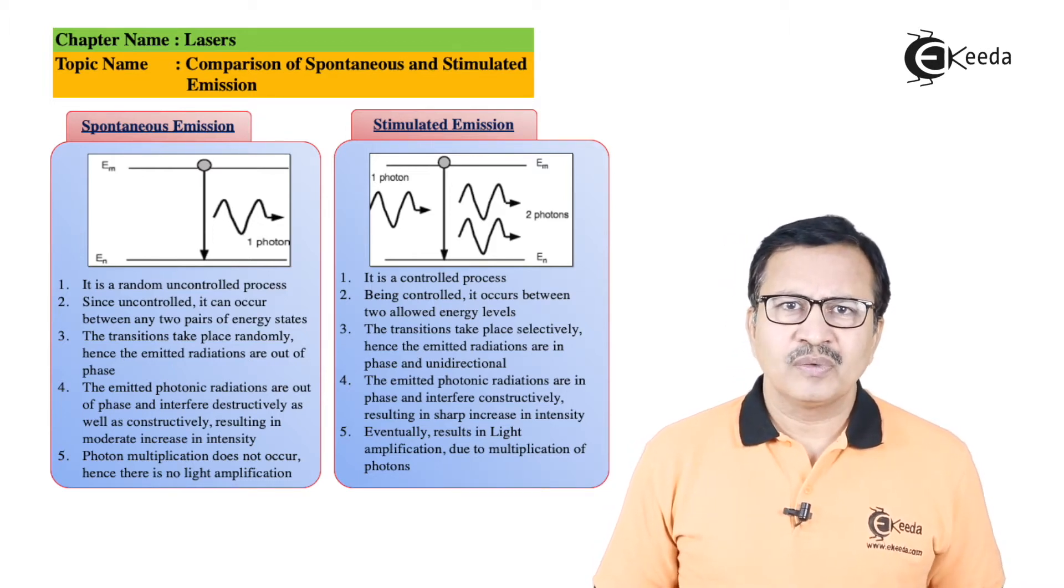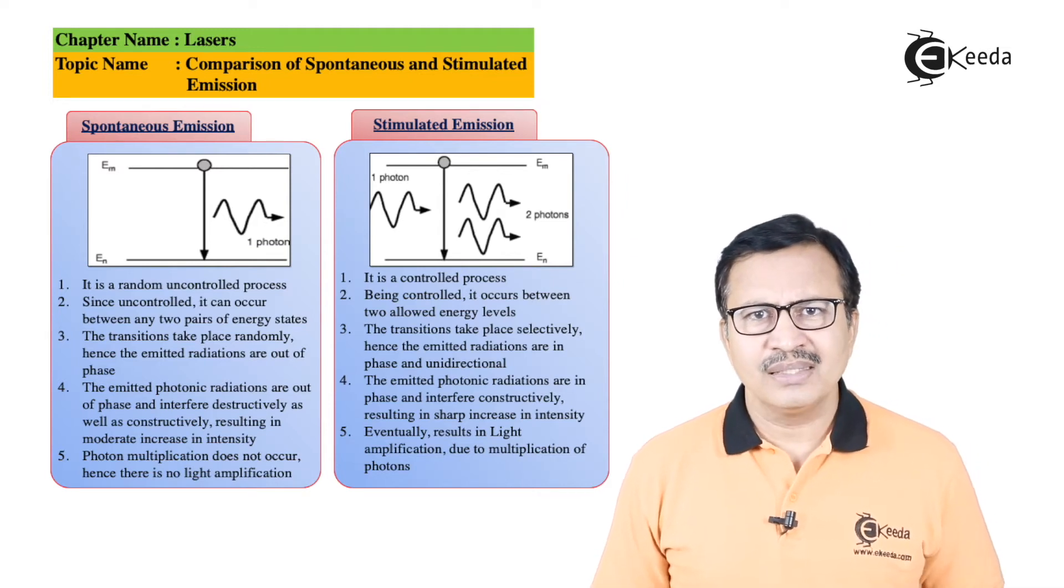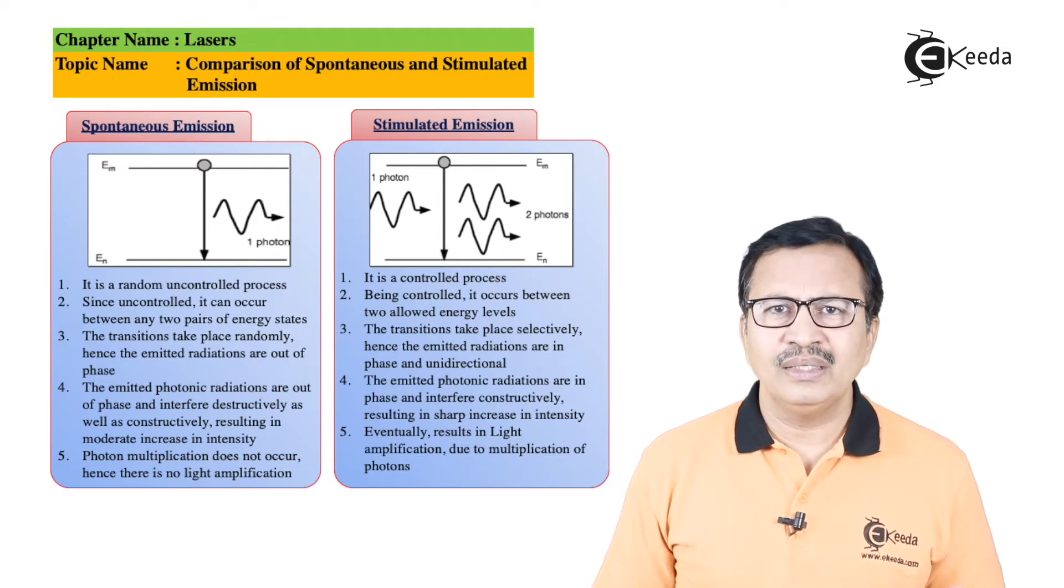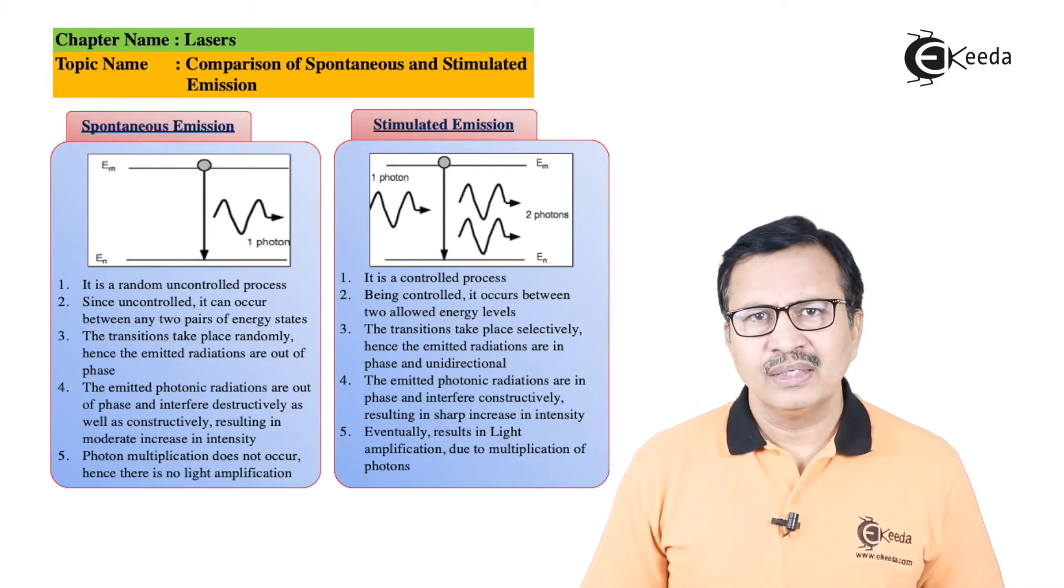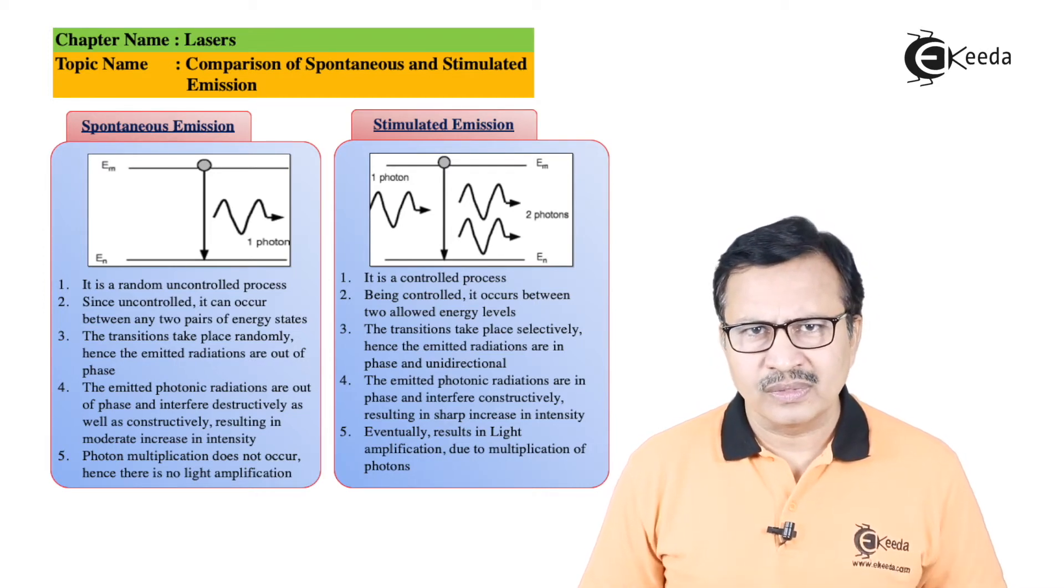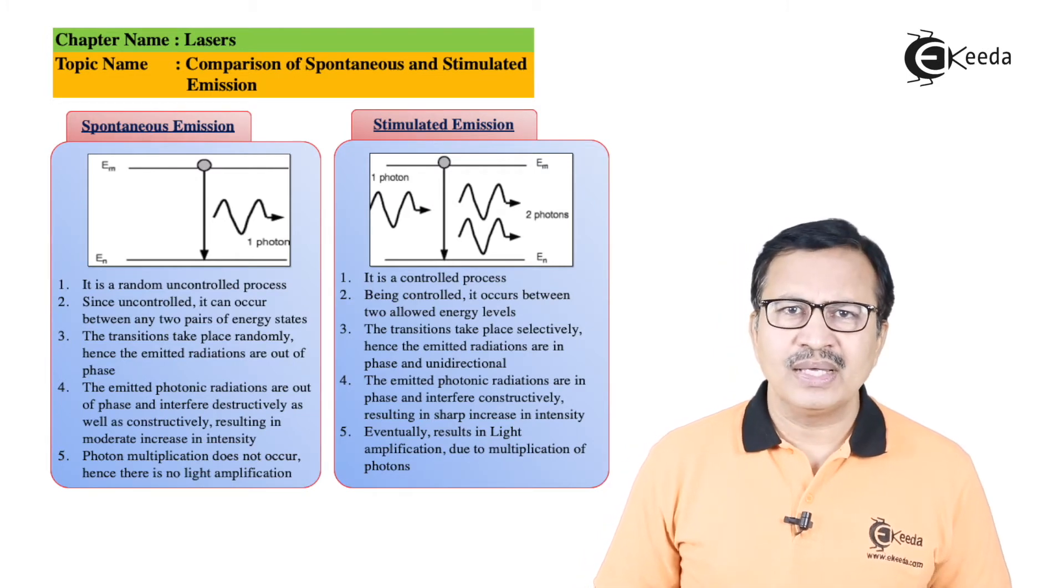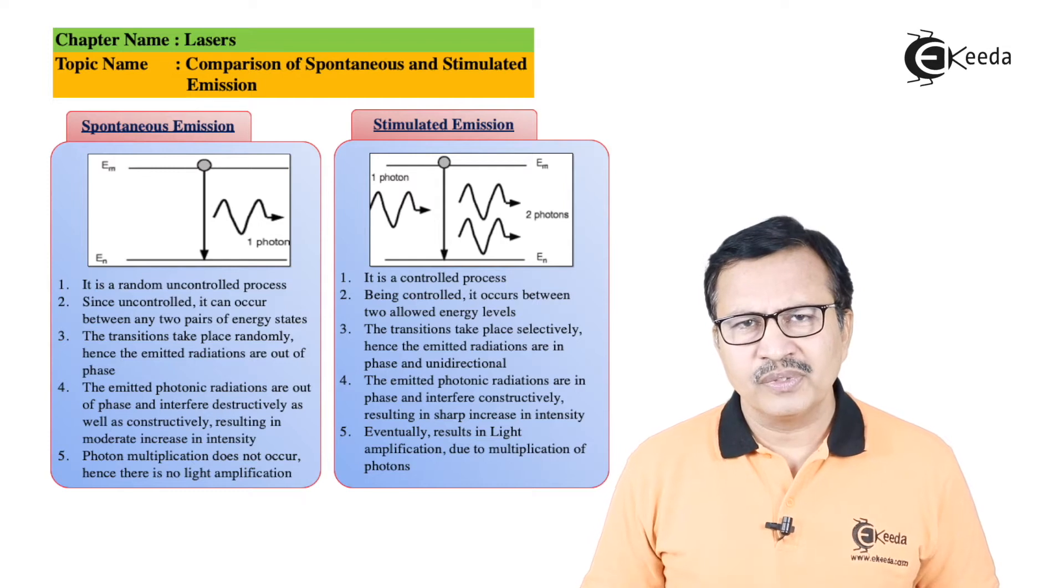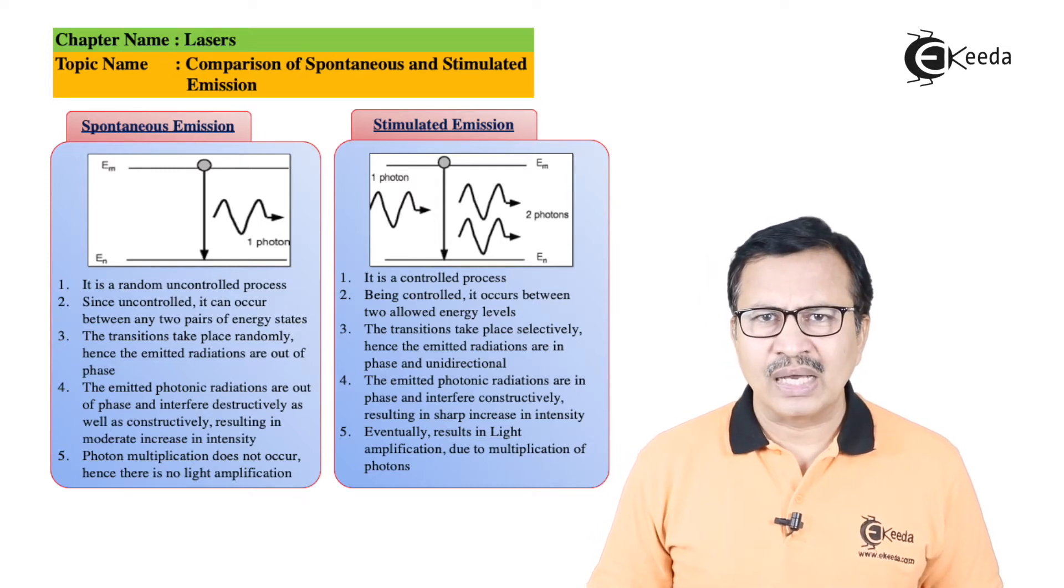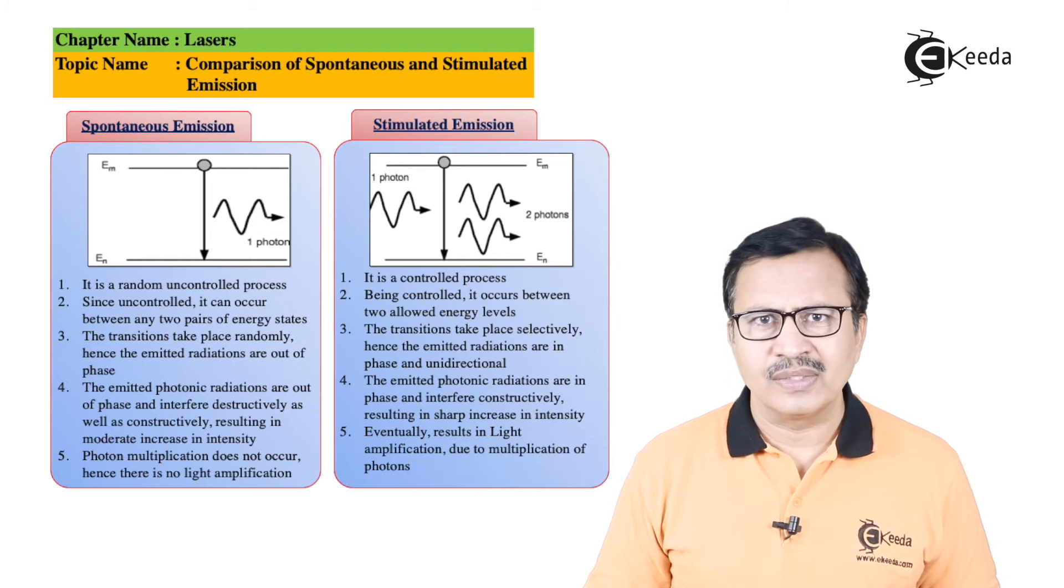Spontaneous emissions, since they are uncontrolled, can have transitions between any two energy levels—of course, those that are allowed by the basic rules. Whereas under stimulated emission, since it is a very controlled process, the transitions will occur between any two allowed energy levels.